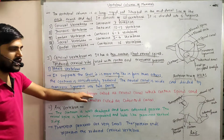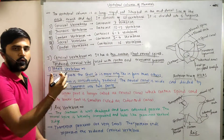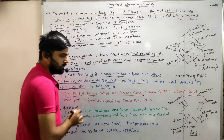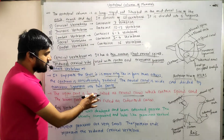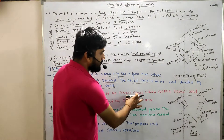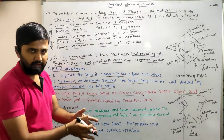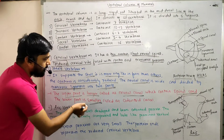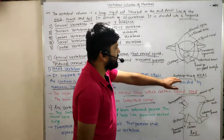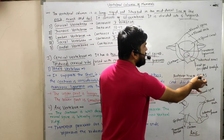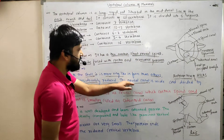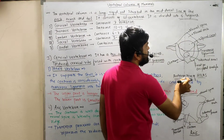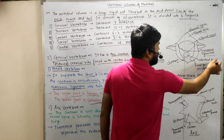The transverse ligament divides the neural canal into two parts: the upper part is larger and is called the neural canal, which contains the spinal cord; the lower part is smaller and is called the odontoid canal. This is the anterior view of the atlas showing the neural arch, neural spine, and odontoid canal.